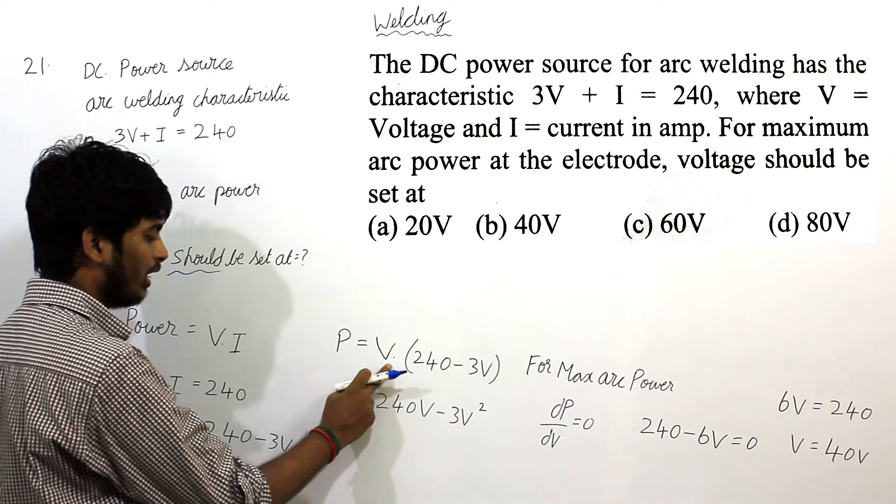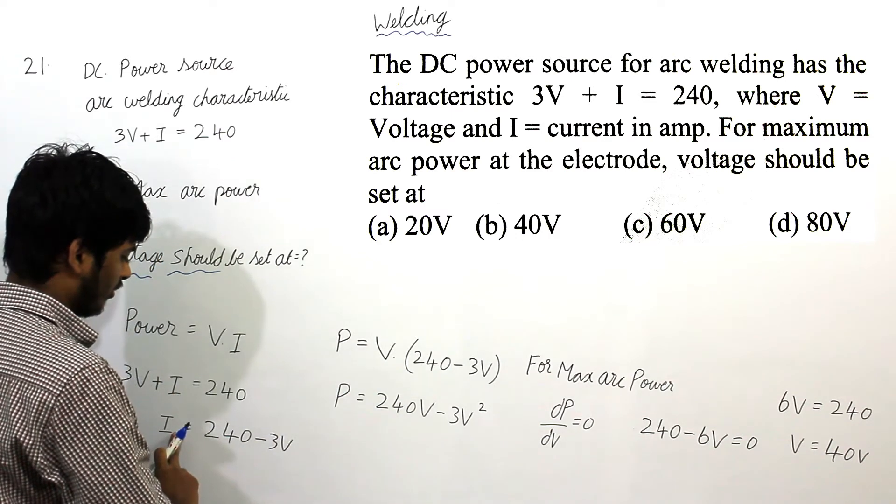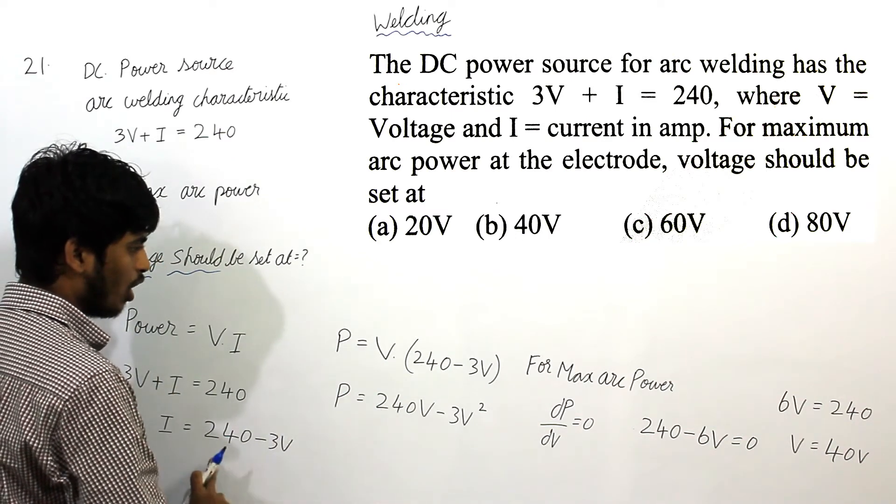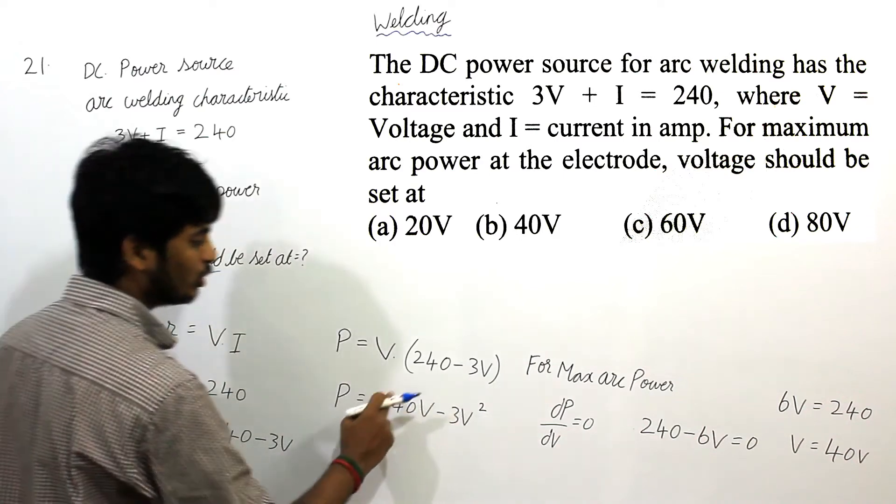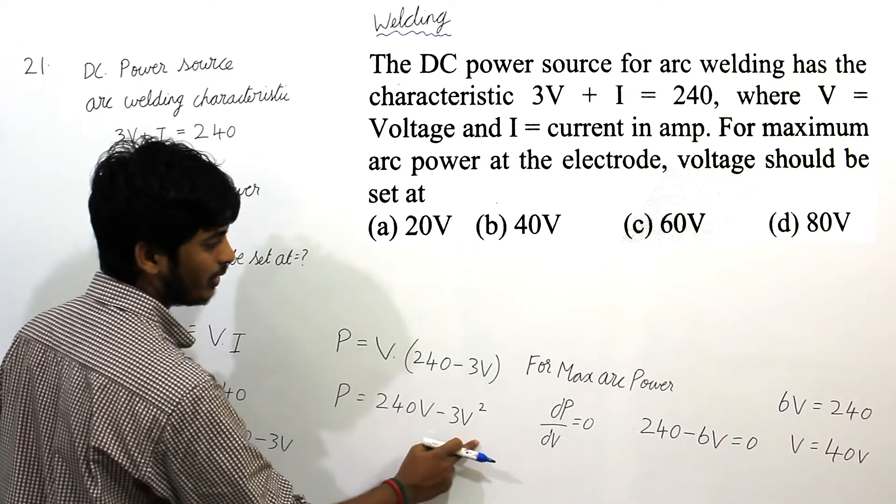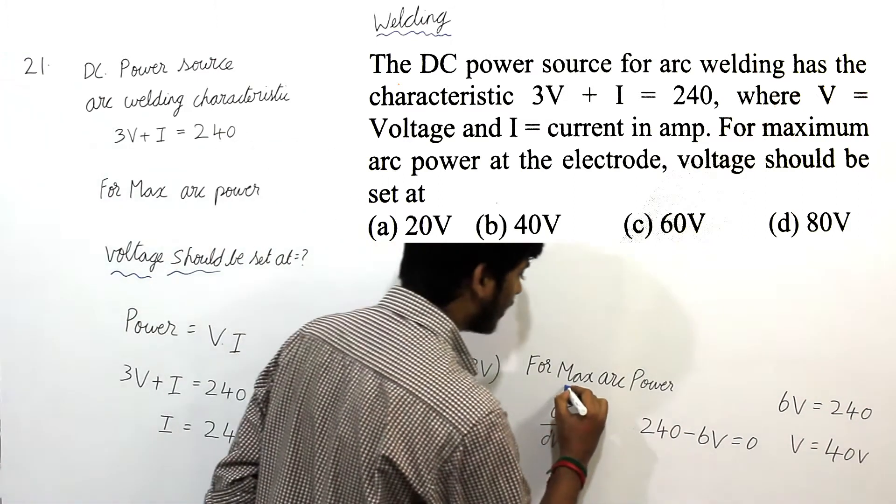So power equals voltage times current. Substituting the I value, I get P = V(240 - 3V), which simplifies to P = 240V - 3V².